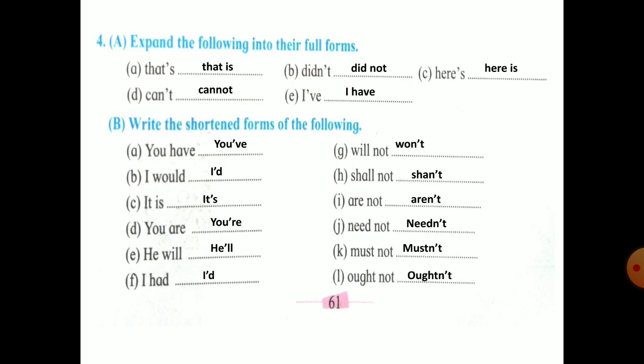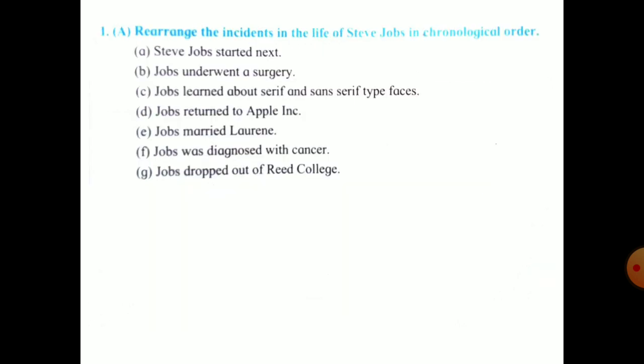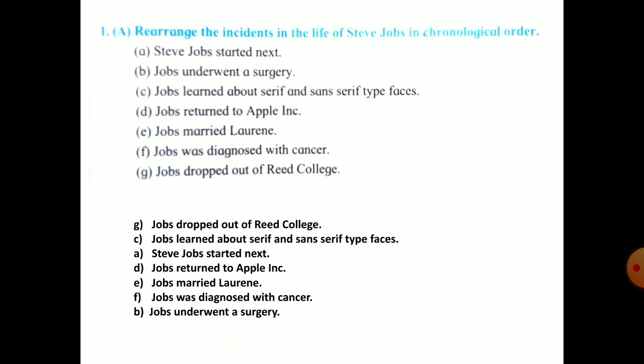Next question: rearrange the incidents in the life of Steve Jobs in chronological order. Sequentially we have to write here. This is the correct chronological order: first, G - Jobs dropped out of Reed College, then C - Job learned about serif and sans serif typefaces, A - Steve Jobs started NeXT, then B - Job's company, then D - Job returned to Apple Inc., meaning incorporated, then E - Jobs married Laurene Powell, F - Job was diagnosed with cancer, and last one is Job underwent a surgery. This is the correct order of the sentences.